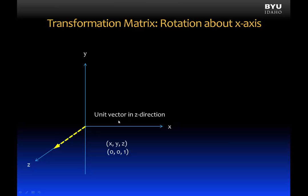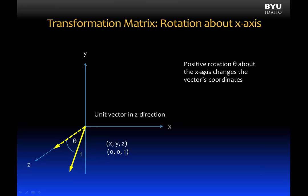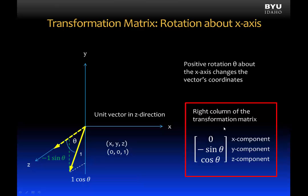Next, we take a unit vector in the z-direction with coordinates 0, 0, 1. When we rotate through angle theta, the unit vector's coordinates again change. In the y-direction, the new coordinate is 1 times the sine of theta, but it is negative because we are in the negative y territory. The z-component is 1 times the cosine of theta. We can now form the right column of the transformation matrix: x-component 0, y-component negative sine of theta, z-component cosine of theta.